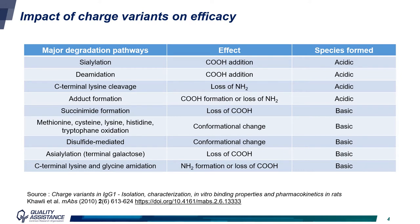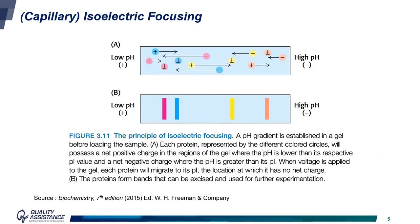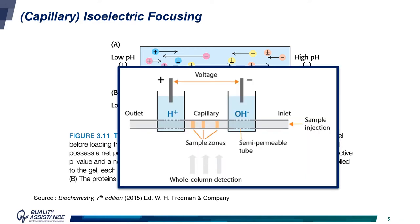To monitor these modifications, the different charge variants are separated based on their PI value. This can be done by isoelectric focusing. Isoelectric focusing is a separation technique based on the difference in PI of proteins, by applying an electric field along the capillary containing the proteins. When applying a current, proteins will move towards the pH corresponding to their PI value, where the net charge is neutral. Here is a display for gel isoelectric focusing, but the principle is the same in capillary isoelectric focusing, with detection based on UV absorbance or fluorescence.